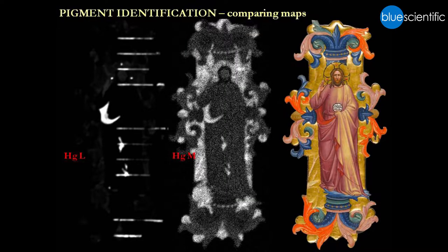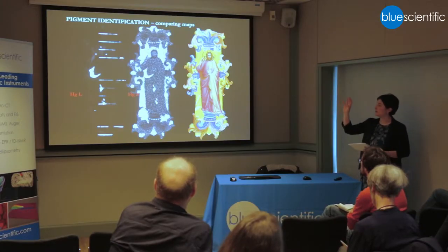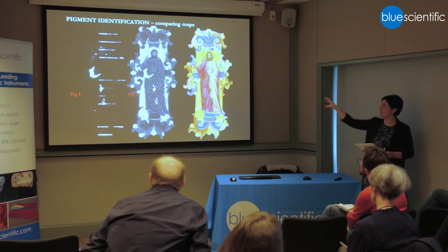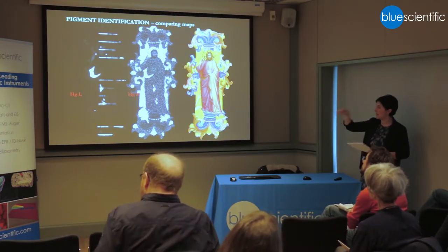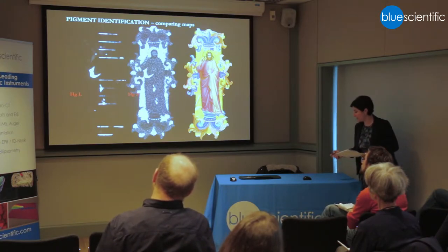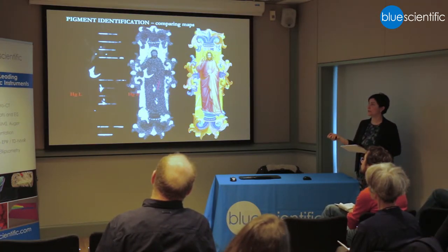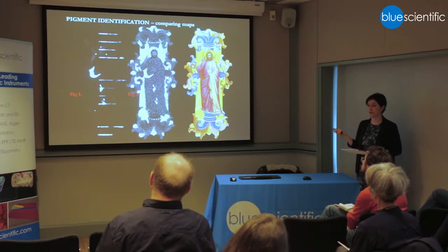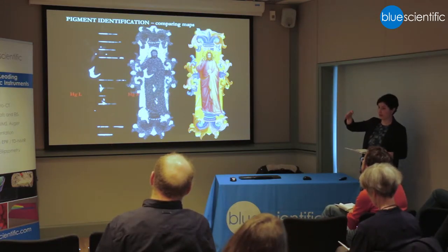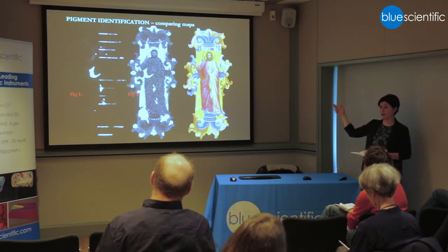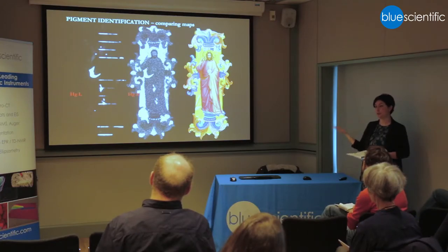Having two maps from two different lines for the same element can be really useful. This is an example with Mercury. If I compare the low-energy Mercury lines — that's the image in the centre — with the high-energy Mercury lines on the left, I can see that there are some features, these lines for example, that don't appear in the low-energy image at all. That's a way to determine that these features are on the reverse of the object, because the high-energy lines penetrate the parchment and the paint layers on the front and reach the detector, while the low-energy Mercury lines can't do that — they just don't reach the detector from the back.